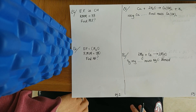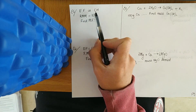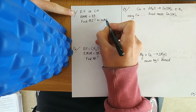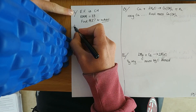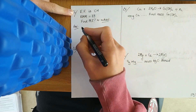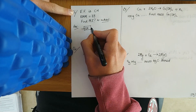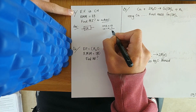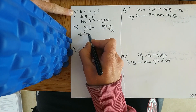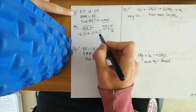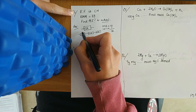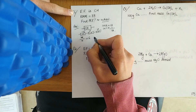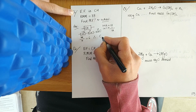Continuing on with the empirical formula: they give us the empirical formula CH and the relative molecular mass, and we've got to find the molecular formula. The molecular formula means the actual number of atoms present in a molecule of the compound. Each CH unit has one carbon and one hydrogen, so the total mass is 13. We want to see how many of these CH units sum up to 78, so 78 divided by 13 is 6.